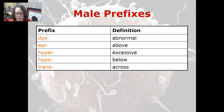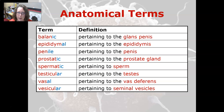The prefixes are: dis for abnormal, epi for above, hyper for excessive, hypo for decreased or below, and trans for across. Then lastly we have some anatomical terms: balanic is pertaining to the glans penis, epididymal is pertaining to the epididymis, penile is pertaining to the penis.